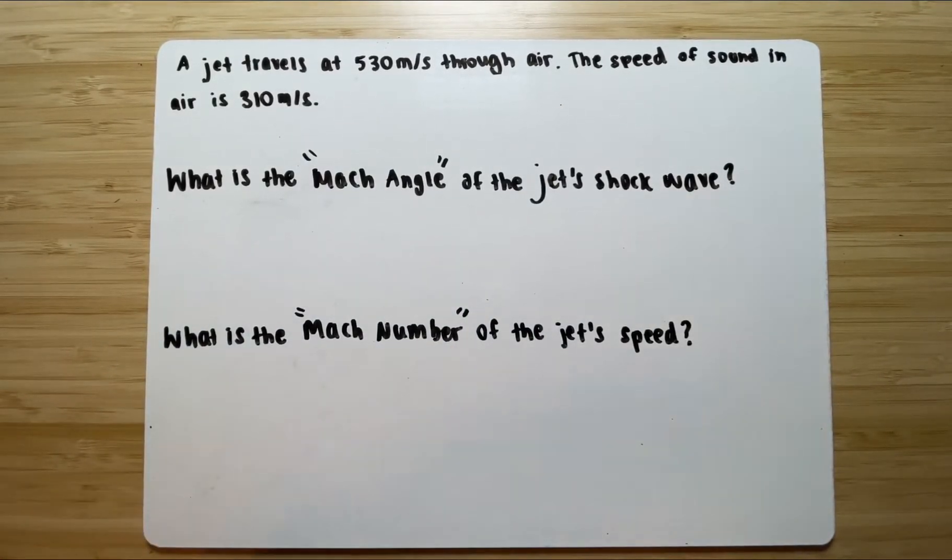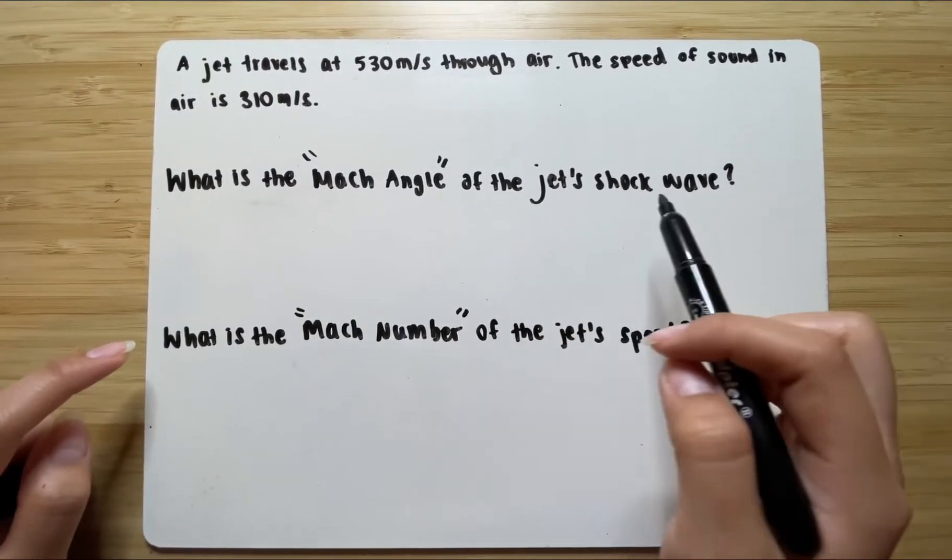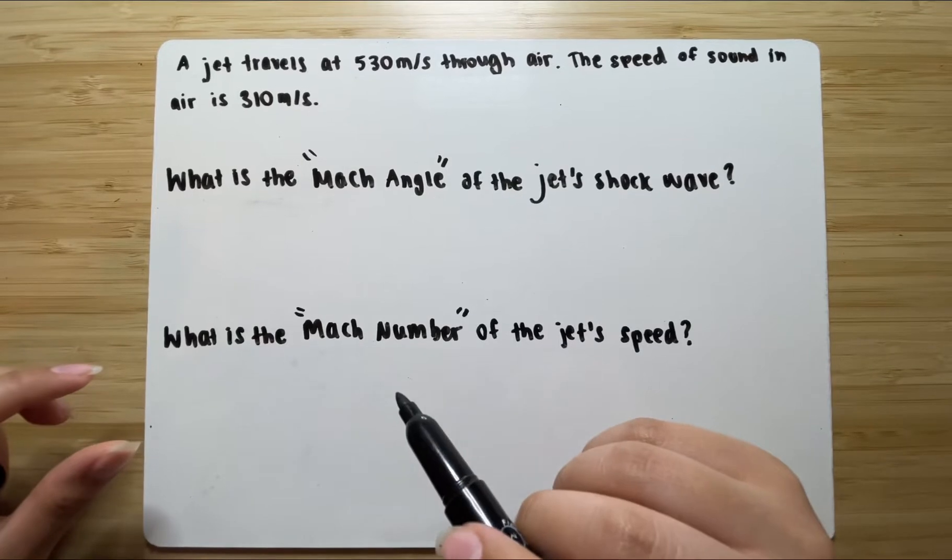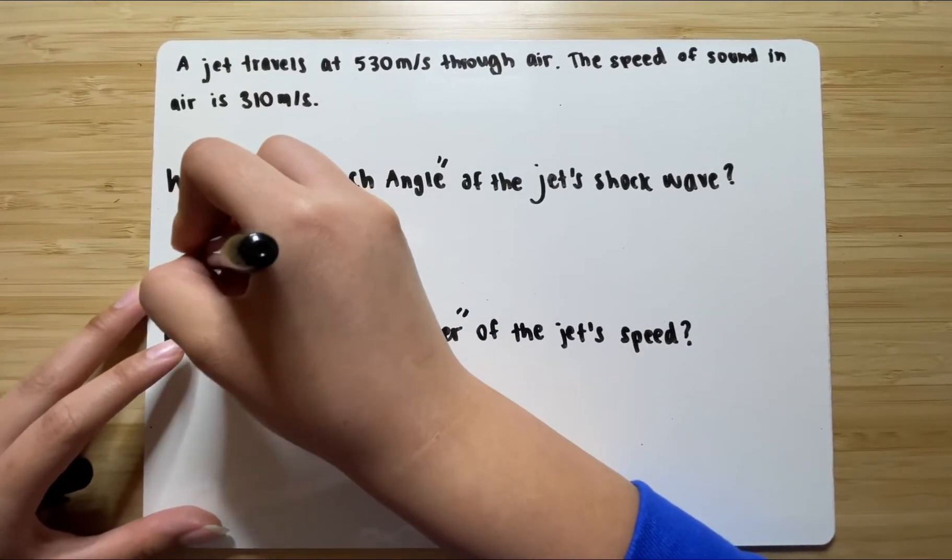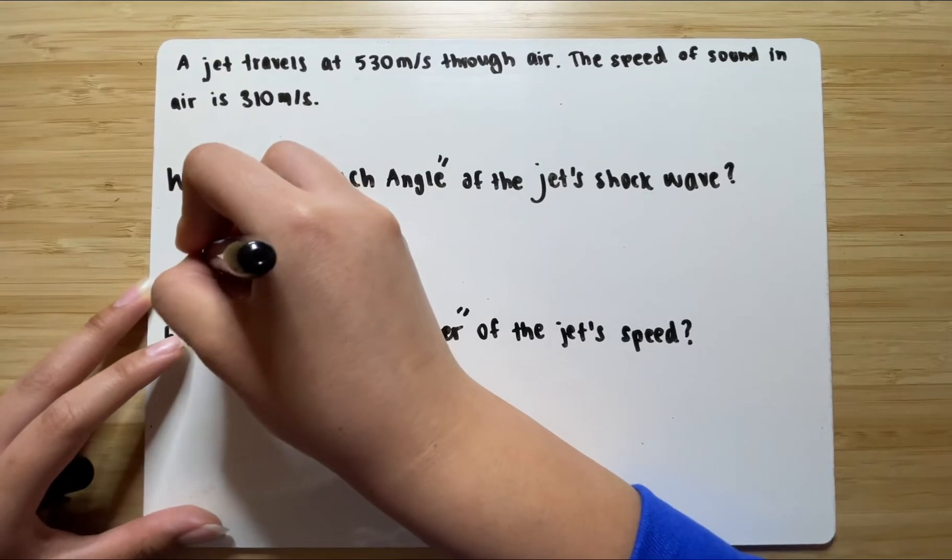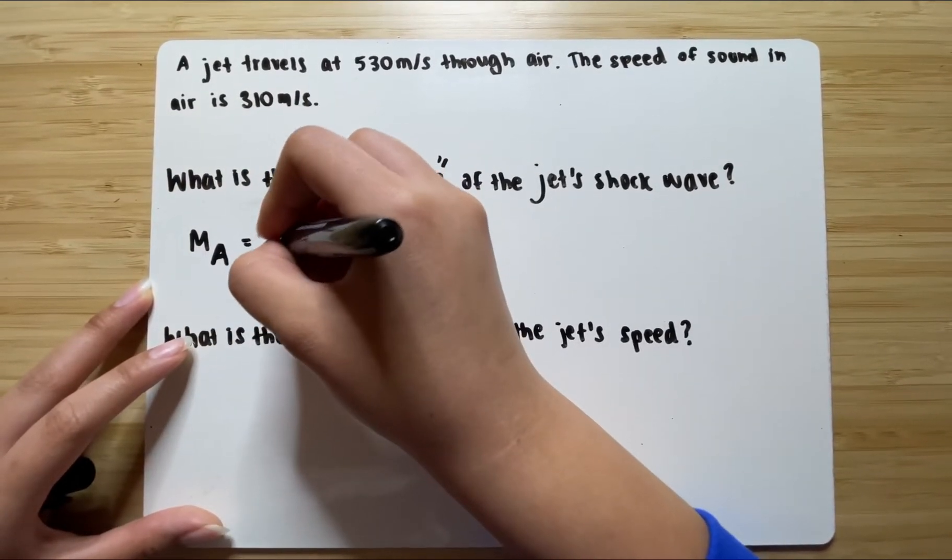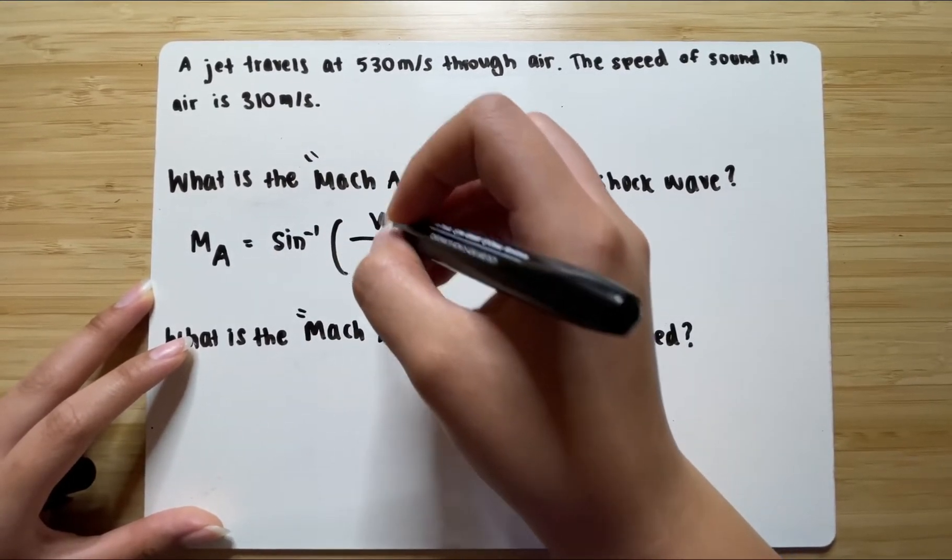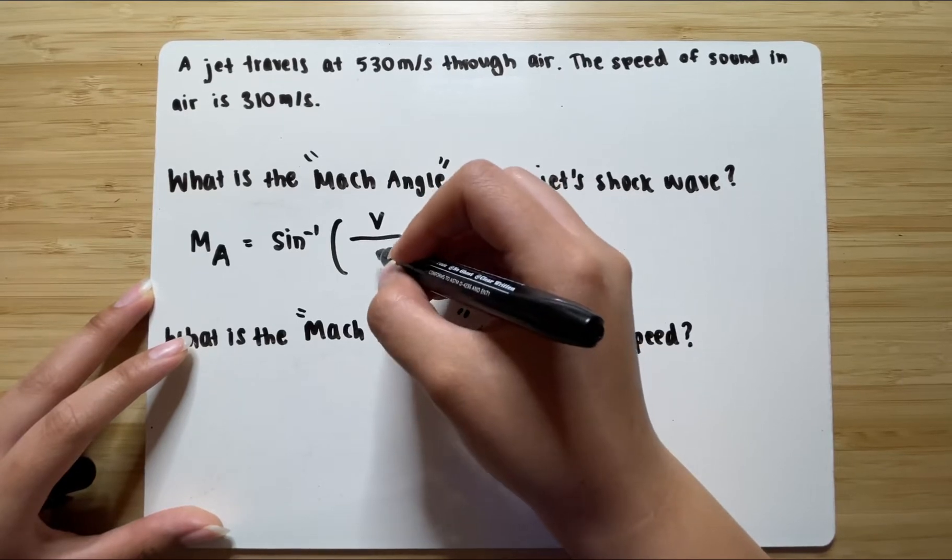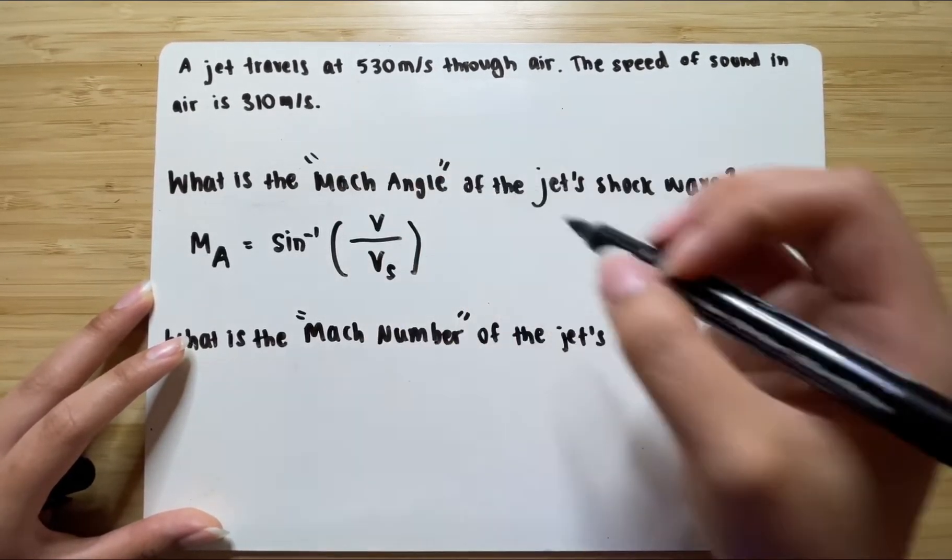So let's begin by answering the first part, Mach angle of the jet's shockwave. The formula to find Mach angle is M sub A equals the inverse sine of the speed of sound over the speed of the source, which in this case is the jet.